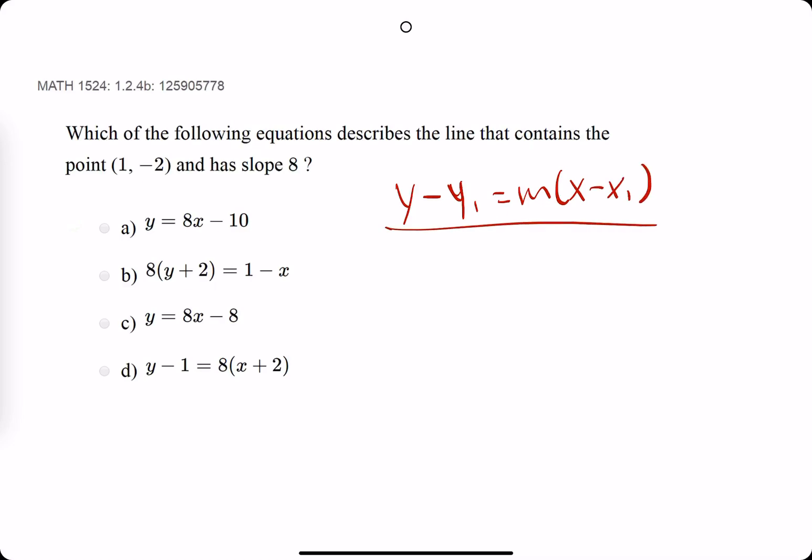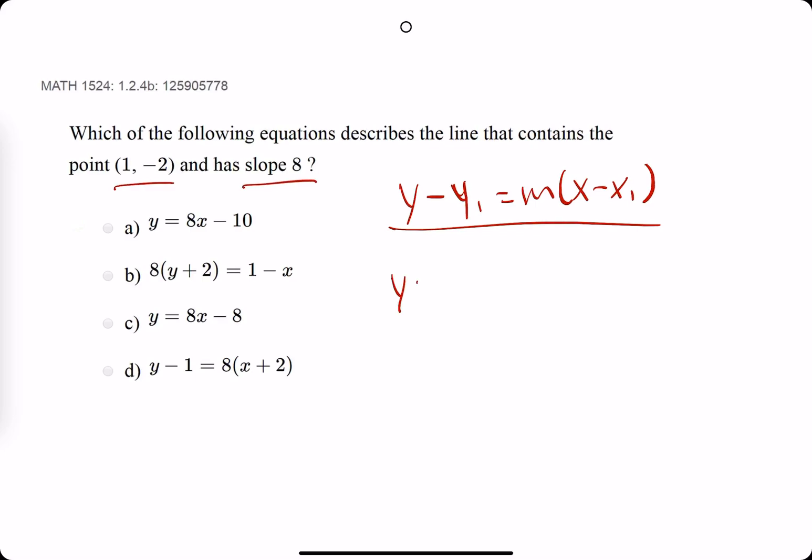So our x1 and y1 match our ordered pair and m is our slope. So we say y minus our y value negative 2 is equal to slope 8 times x minus x1 which is positive 1.